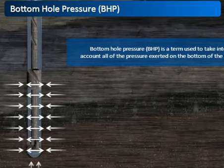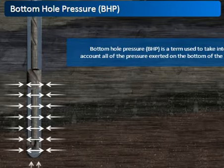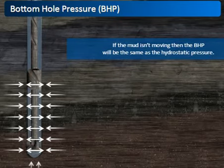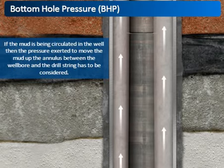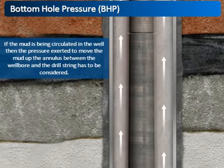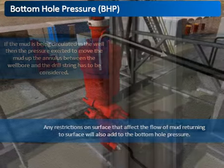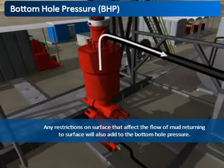Bottom hole pressure is a term used to take into account all of the pressure exerted on the bottom of the well. Most of the pressure comes from the hydrostatic pressure of the fluid column, so if the mud isn't moving, then the bottom hole pressure will be the same as the hydrostatic pressure. However, if the mud is being circulated in the well, then the pressure exerted to move the mud up the annulus between the wellbore and drill string has to be considered, as the effect will be to increase bottom hole pressure. The smaller the annulus, the greater the pressure. Any restrictions on surface that affect the flow of mud returning to surface will also add to the bottom hole pressure.